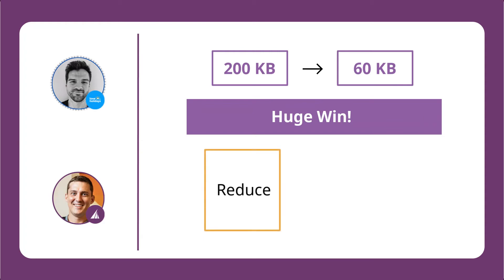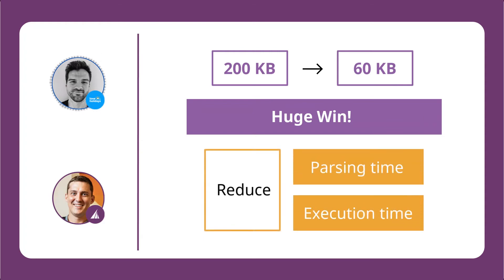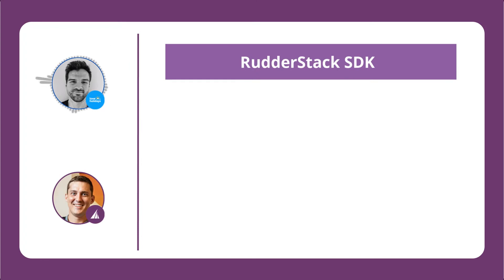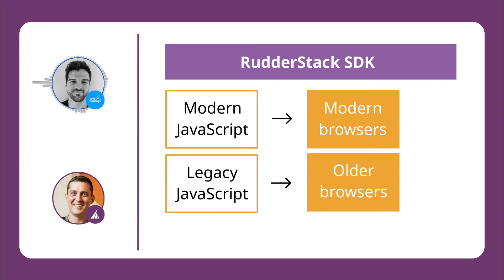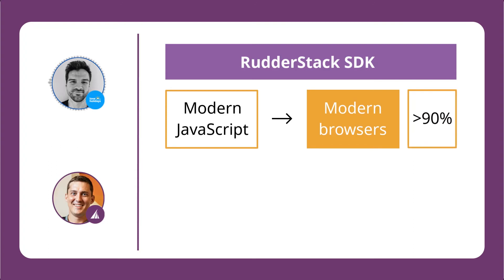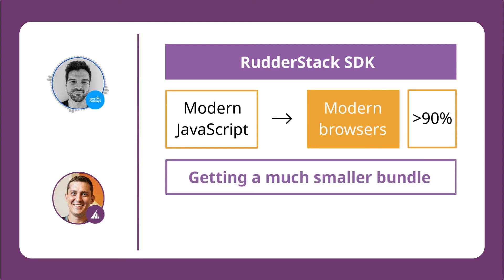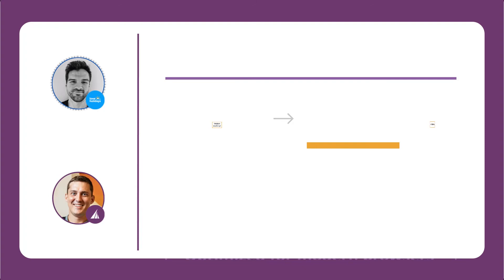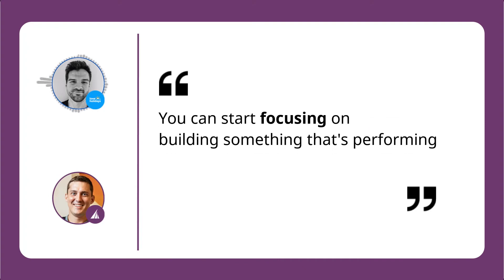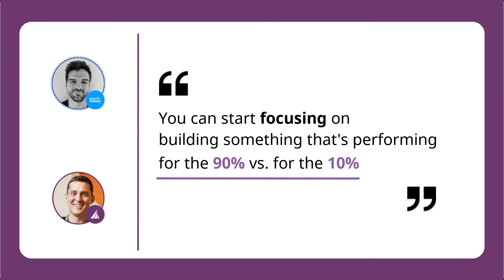That also reduced the parsing time and execution time of the script. There's another piece that I think is super cool — the RudderStack SDK only sends modern JavaScript to modern browsers and legacy JavaScript to older browsers. This means that users on a modern browser, which is always going to be over 90%, are actually getting a much smaller bundle because it's optimized for that modern browser. More companies should be doing this — you can start focusing on building something performant for the 90% versus the 10%.